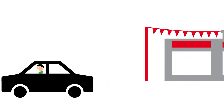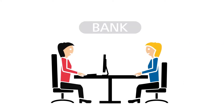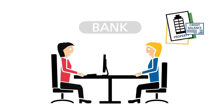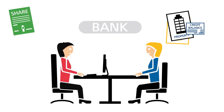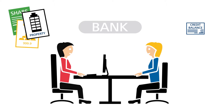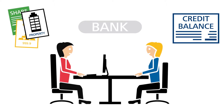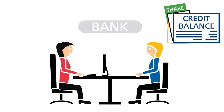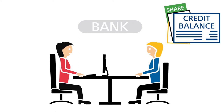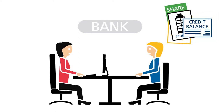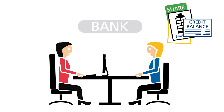The banks therefore create book money by granting loans. There is also another way to create book money: a bank purchases assets — for example shares, gold, or property — from its customer, Ms. Müller, and credits her account with the purchase amount. This procedure can also work in reverse: the bank sells assets to Ms. Müller and withdraws the purchase amount from her credit balance, which decreases the stock of book money.